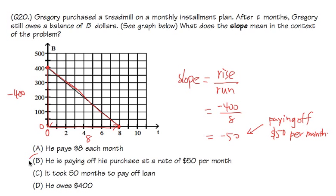And that's exactly choice B. He's paying off the purchase at the rate of $50 per month. Once again, the slope represents the rate, and we got it.